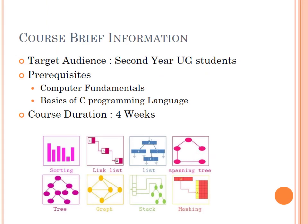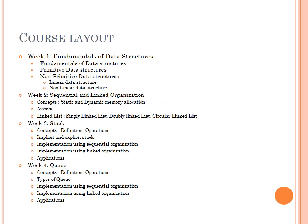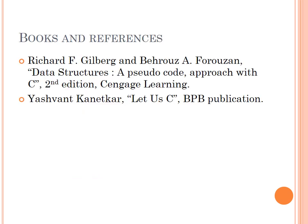This is the brief information about the course. The target audience for the course are UG students. Pre-requisites for the course are computer fundamentals and basics of C programming, and the duration of this course would be 4 weeks. These are the course objectives, these are the course outcomes, these are the contents of the course, and these are the books and references for the course.